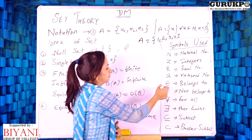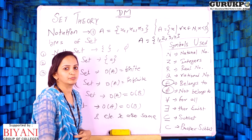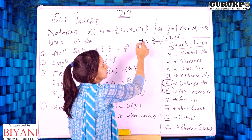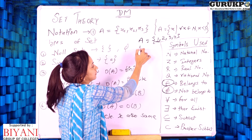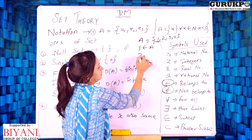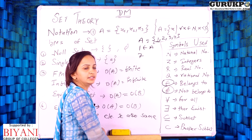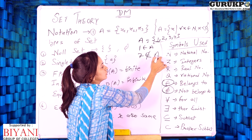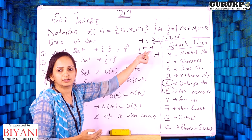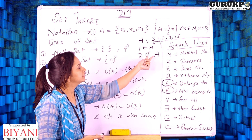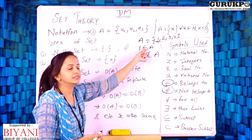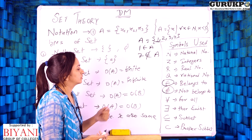The symbol '∈' means 'belongs to' and '∉' means 'not belongs to.' For example, if element 1 is in set A, I write 1 ∈ A. But if I say 7, and 7 is not in the set, I write 7 ∉ A. These symbols relate only to whether an element is in the set or not.